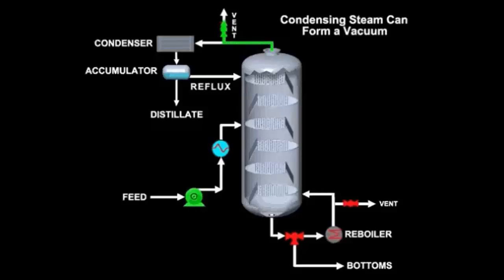Open the vent to the column as a safeguard. Add enough water to the column to fill the bottom sump. Next, start the reboiler to create steam from the water in the sump.